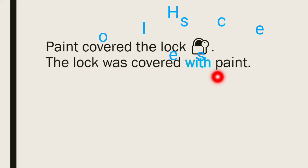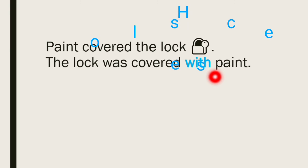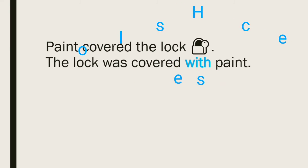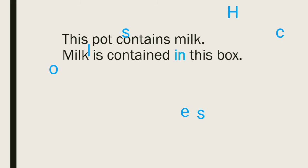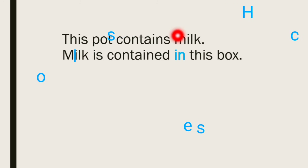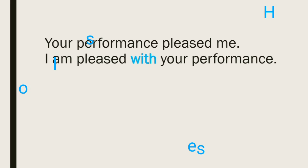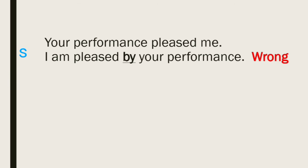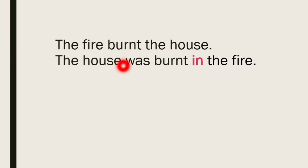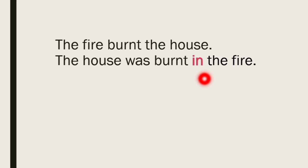So these are some common errors which you have to keep in mind while changing from active to passive voice. If you don't want your marks to be cut, remember: when 'paint covered the lock,' use 'with'; when 'contain' appears, use 'in' in place of 'by'; when 'pleased' appears, use 'with' in place of 'by' — because you can be pleased with, not pleased by. And in the sentence 'The fire burned the house,' the house was burned in the fire, not by the fire. Keep these points in mind while making the transformation from active to passive. Thank you.